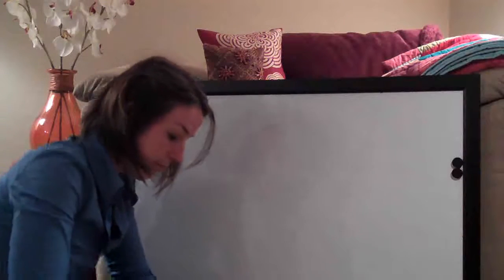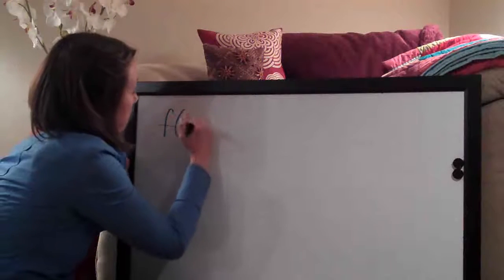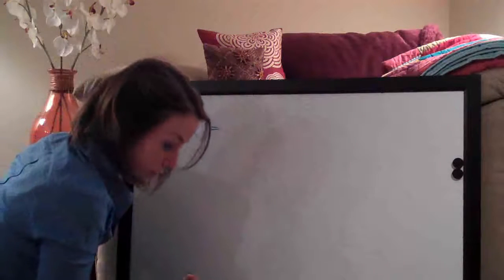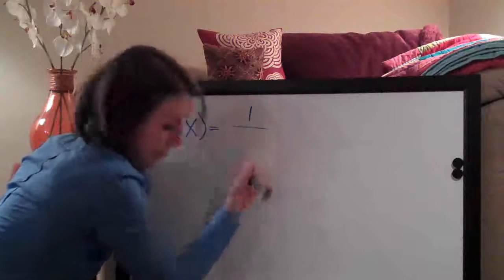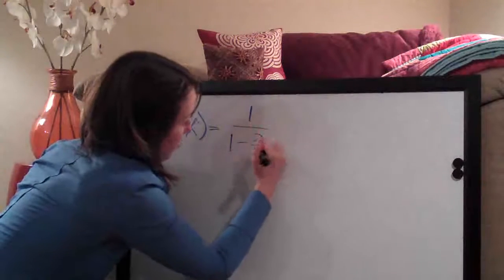So we're going to do a couple of problems. The first one that we're going to do is f of x equals 1 over 1 minus 2 over x.